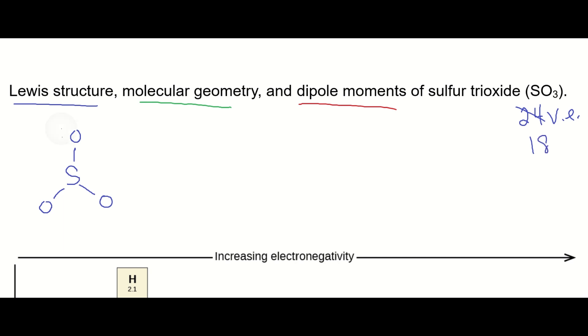Next, let's get the terminal atoms the octet. Each of these oxygens already have two in the bonding pair, so they're going to want six more to reach the octet.